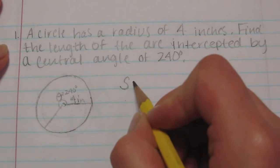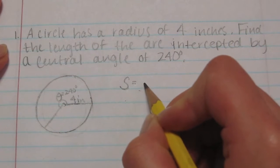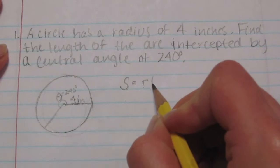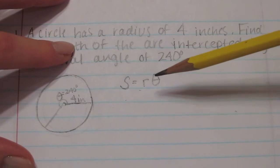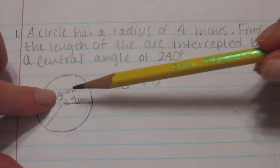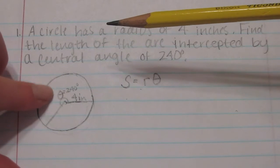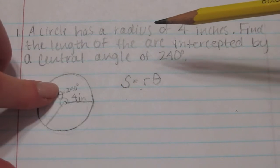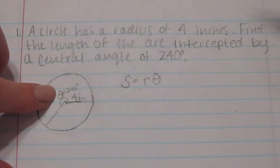And to find s you need to multiply the radius by theta. What's important is because theta is unitless we can't use degrees. So we have to convert the degrees of the angle into radians.